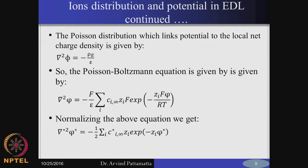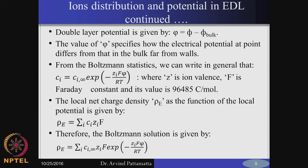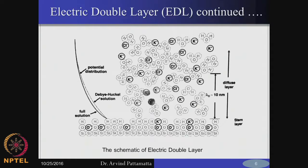Let us continue our discussion related to electrokinetics. I would like to correct some small mistakes from the last presentation related to electroosmosis. I hope you recollect our discussion on the double layer. We talked about normal water, which is a polar fluid, and also an aqueous solution of some salt such as sodium chloride or potassium chloride.